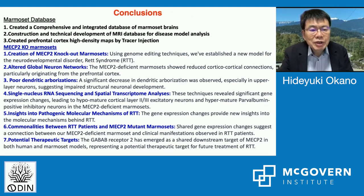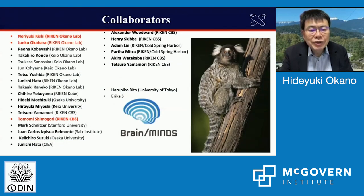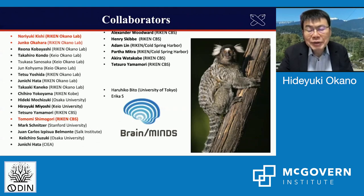To summarize: we created a comprehensive integrated database of the marmoset brain, including MRI, tracer injection, and gene expression. For the MeCP2 mutant marmoset model, single-nucleus RNA-seq transcriptomics analysis revealed commonalities between patients and MeCP2 mutant marmosets, and we identified GABA-B receptor 2 as a potential therapeutic target. These results were done with colleagues at Riken CBS and Keio University, and collaborators worldwide including colleagues at the McGovern Institute, Guobi Feng, and Bob Desimone. Thank you very much for your attention.